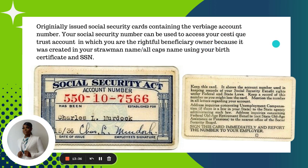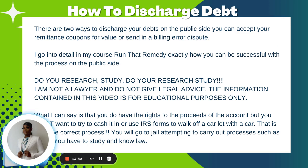There are two ways to discharge your debts on the public side: you can accept your remittance coupons for value, or you can send in a billing error dispute. I go into detail step by step in my course, Run That Remedy, on exactly how to be successful with that process on the public side. I am not a lawyer and do not give legal advice — the information in this video is for educational purposes only.